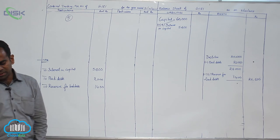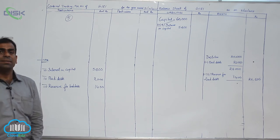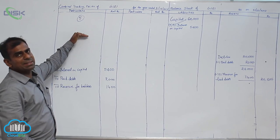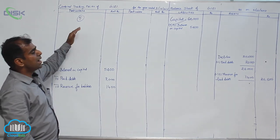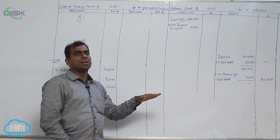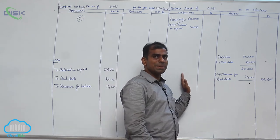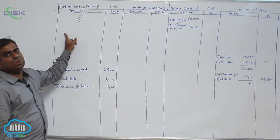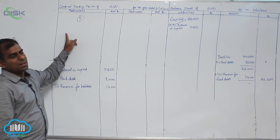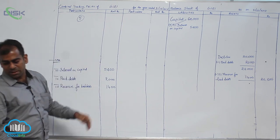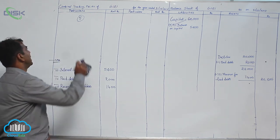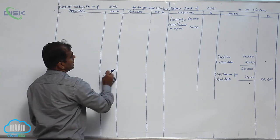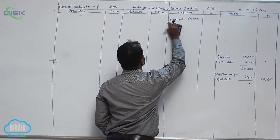Next, outstanding wages — the treatment is that of an outstanding expense. In the trading account, we add outstanding wages to wages. Outstanding wages represent a personal account and a liability, so they go on the liability side of the balance sheet and are added to wages in the trading account, as done in previous problems. With this, you will be able to solve the fifth problem. Moving on to the sixth problem, we will quickly mark items as nominal, personal, or real and see the treatment of adjustments.